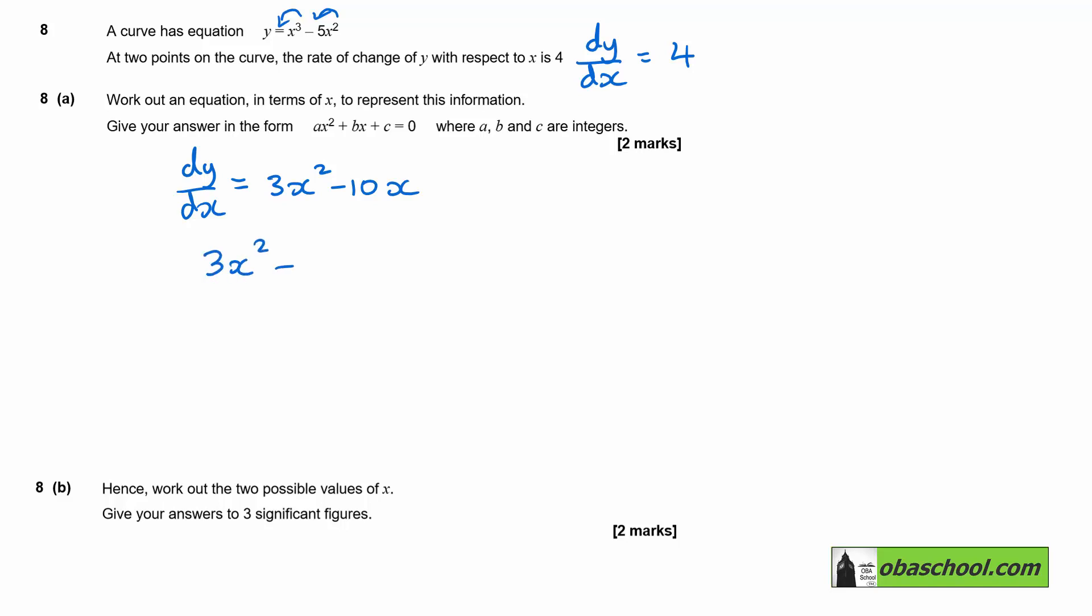Therefore 3x squared minus 10x is equal to 4, and so 3x squared minus 10x minus 4 is equal to 0.